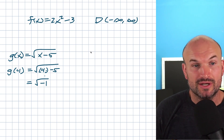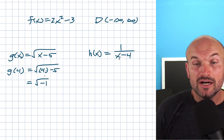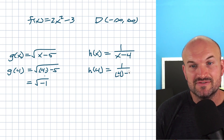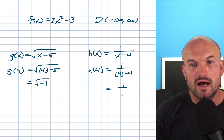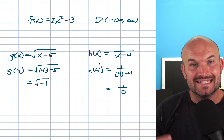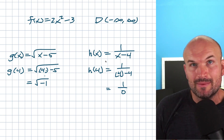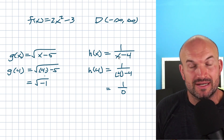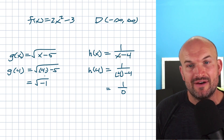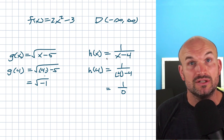But restrictions don't stop there. Another restriction appears with h(x) = 1/(x - 4). When I plug in 4, I get 1/(4 - 4) = 1/0. We cannot divide by 0, so h(4) is not defined — 4 is not in the domain. But any other number, whether negative 3 or 5, can be plugged in and I'll get a value. The only number I cannot plug in is 4, because that makes the denominator equal to 0.